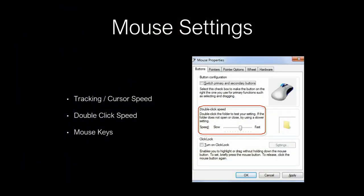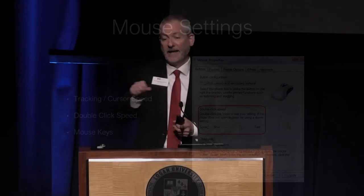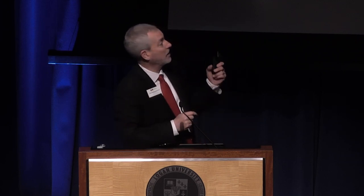Let's talk about mouse adjustments. I think the thing most people would benefit from is changing the tracking or cursor speed. On a Windows computer, go to Settings, select Mouse, and you can slow down or speed up the speed of your mouse cursor. In most cases for people with Parkinson's, I would think the answer is to turn the mouse speed down just a little bit — that means if you have a little bit of a tremor, the mouse cursor is not going to move so much.